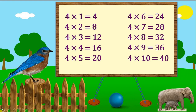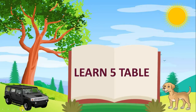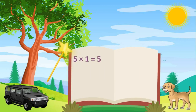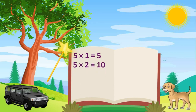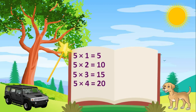Run. 5-table. 5-1-0-5. 5-2-0-10. 5-3-0-15. 5-4-0-20. 5-5-0-25.